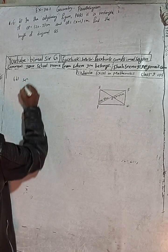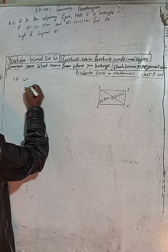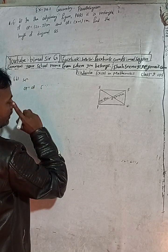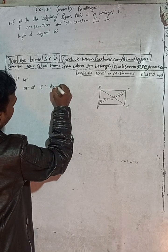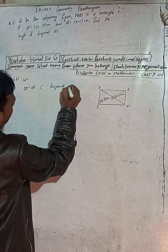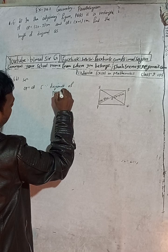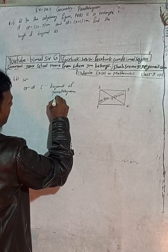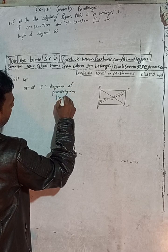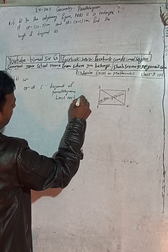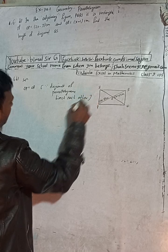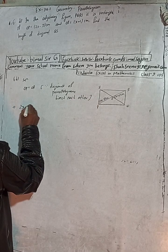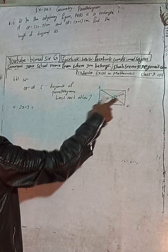Solution: OP is equal to OR. The reason for this is that the diagonals of a parallelogram bisect each other. OP is given as 2x minus 3 and OR is given as x plus 1.